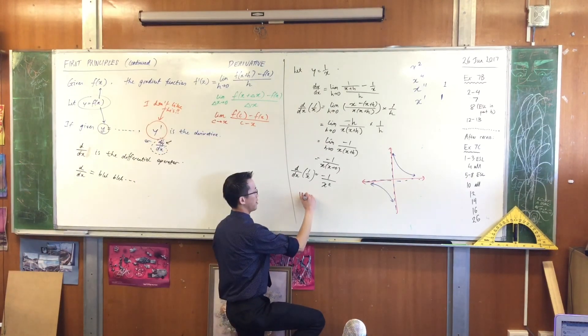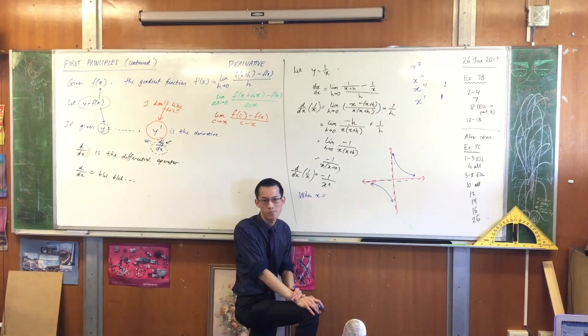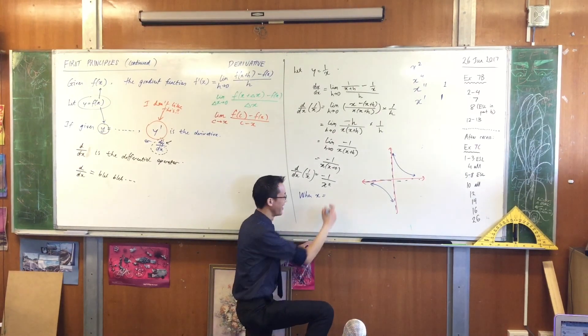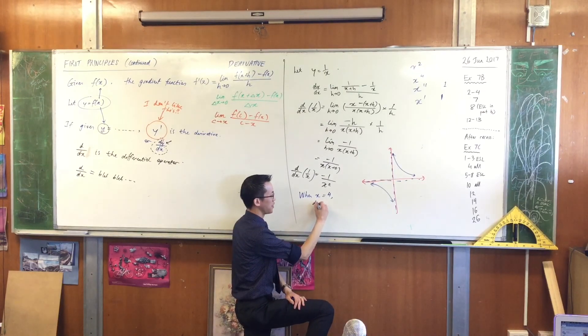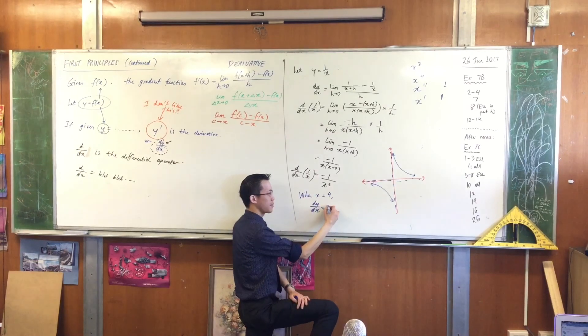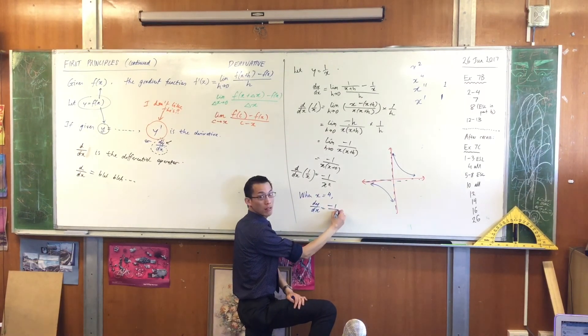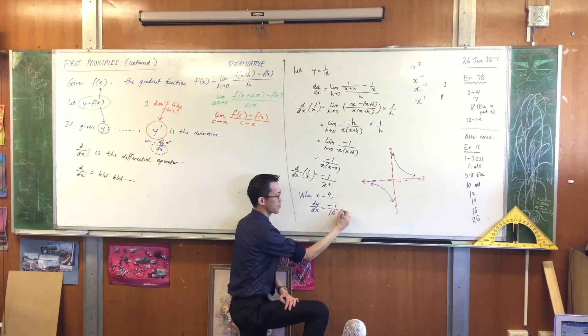What does that mean? Well, let's just test out a value. So I could say, when x equals, give me a number. Sure. When x equals 4, what's the derivative going to be equal to? I'm just going to evaluate it. It's going to be minus 1 over 4 squared, which in this case is 16.